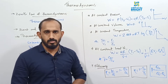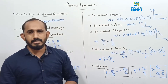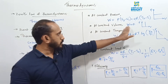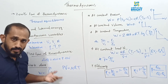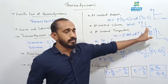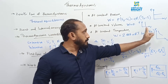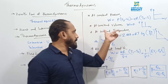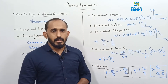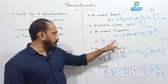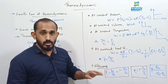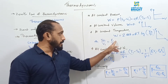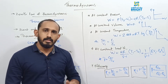In the P-V diagram for constant volume, volume is constant but pressure is increasing — so no work is done. For an isothermal process, P × V is constant, meaning pressure is inversely proportional to volume. The relation is V2/V1 = P1/P2. The work done in an isothermal process is W = 2.303 nRT log(V2/V1), where n is moles, R is the gas constant, T is constant temperature, and V1, V2 are initial and final volumes. Instead of V2/V1, you can also use P1/P2.